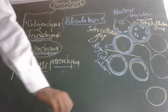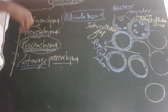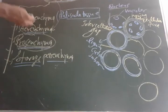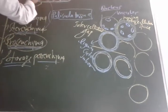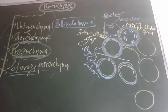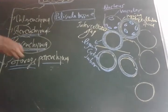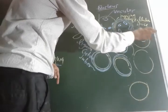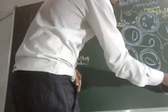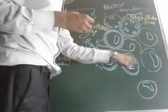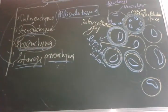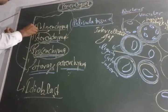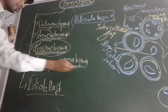The fourth type is storage parenchyma. When a plant performs excess photosynthesis and produces excess glucose, parenchyma cells convert into storage parenchyma cells. In storage parenchyma cells, the size of the vacuole increases, and they become responsible for storing different types of products. So the four types of parenchyma cells are: chlorenchyma, aerenchyma, prosenchyma, and storage parenchyma.